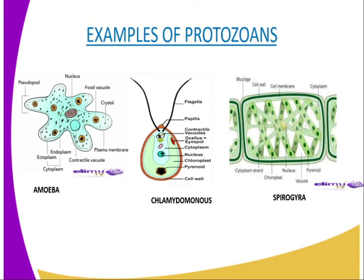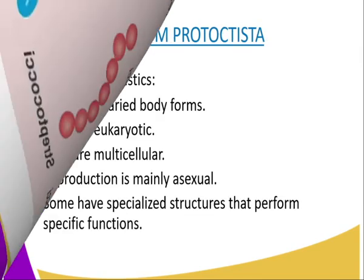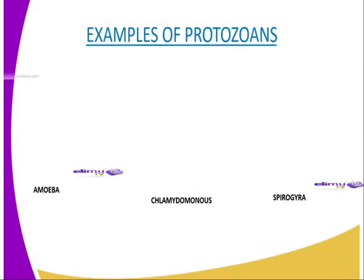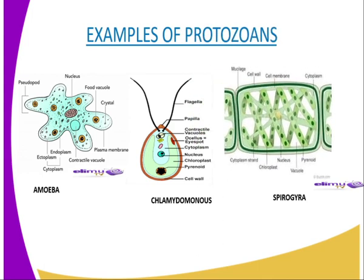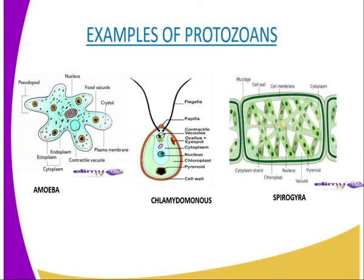In the case of chlymidomonas, it uses the flagella for movement. But others are not able to move, and biologically we normally say they are sessile. The last characteristic is that some of them have specialised structures that perform specific functions. For example, we have the contractile vacuoles for osmoregulation. As you can see from our diagrammatic representation, in the case of the amoeba, it has got a contractile vacuole, whereby the contractile vacuole is normally used for osmoregulation.